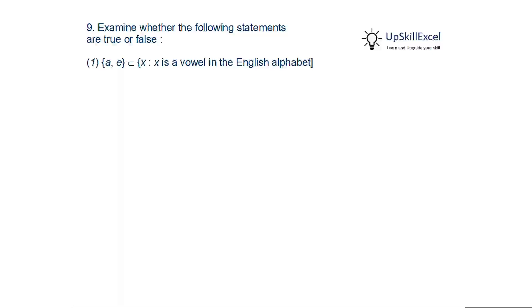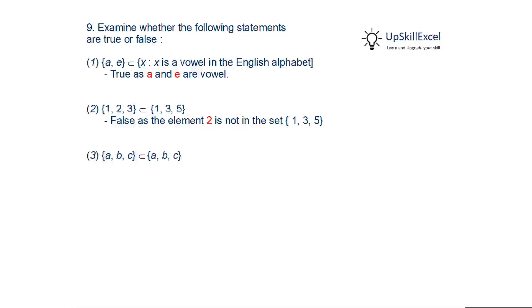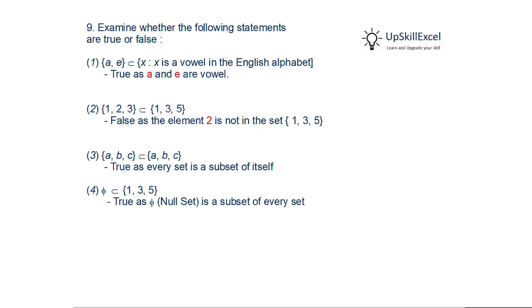Examine whether the following statements are true or false. First: {a, e} is a subset of X where X is a vowel in the English alphabet. There are five vowels — a, e, i, o, u — so a and e are indeed vowels; this is true. Second: {1,2,3} is a subset of {1,3,5} — the element 2 is not in the right-hand side, so this is false. Third: {a,b,c} is a subset of {a,b,c} — every set is a subset of itself, so this is true.